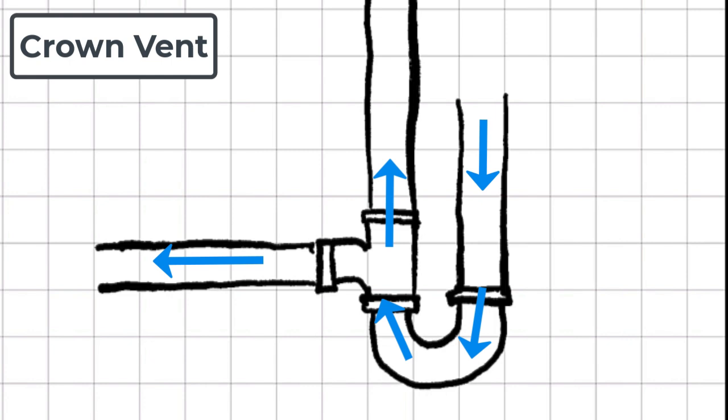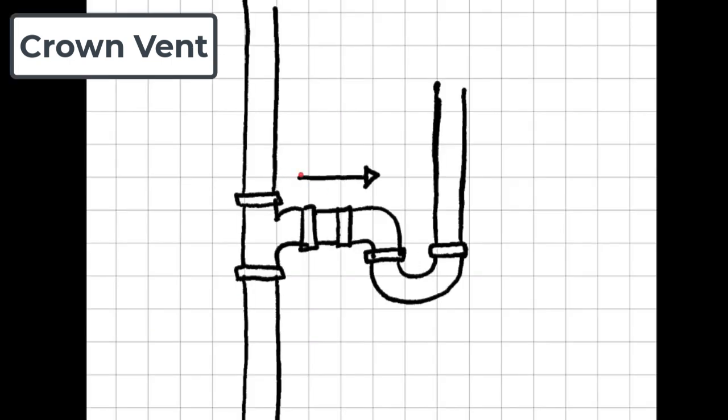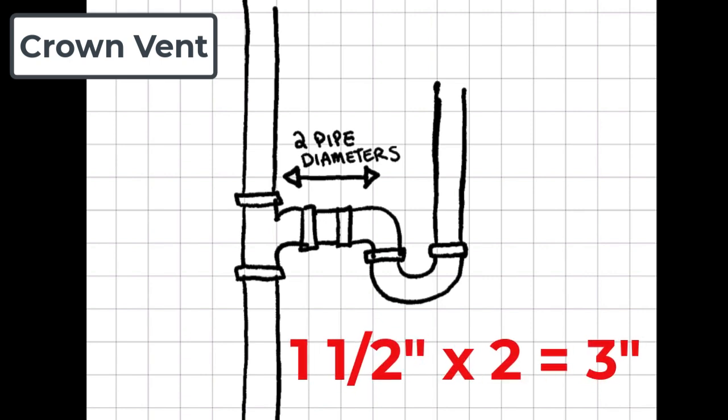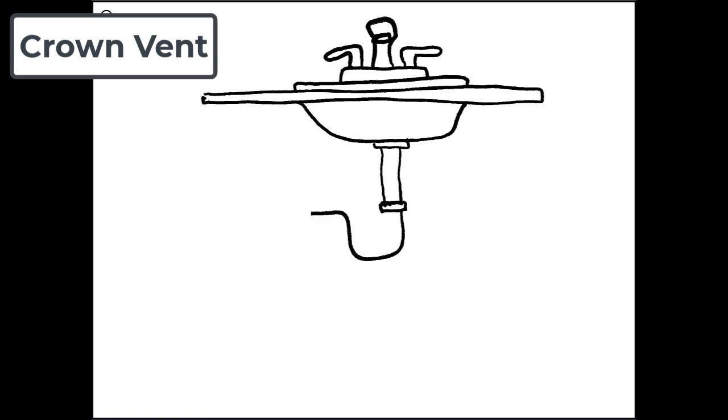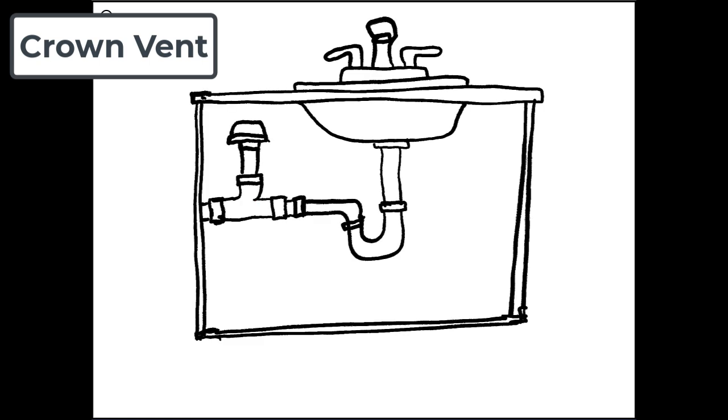This direct connection to the trap would often lead to the vent becoming blocked because the waste from the trap would flow up into the vent. For this reason, crown vents are required to branch off two pipe diameters downstream from the trap. For example, a crown vent for an inch and a half pipe would branch off three inches downstream from the trap.